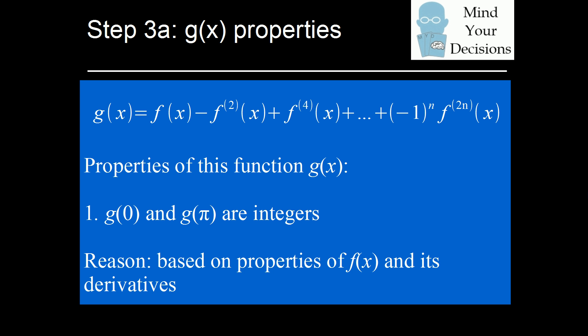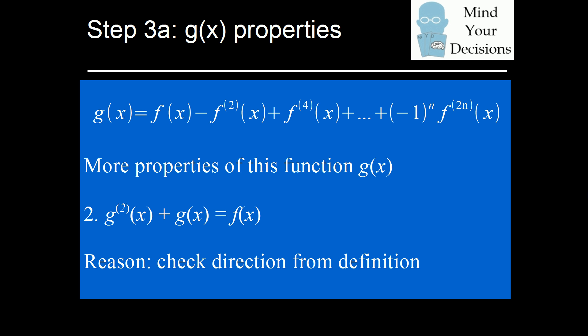There's another property of g of x which will become important: the second derivative of g plus g of x will equal f of x. This is pretty easy to verify. You can directly compute the second derivative of g of x and you'll see that all the terms cancel except for f of x.